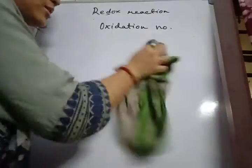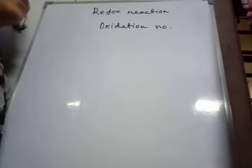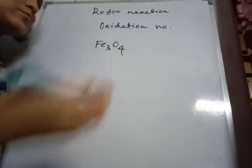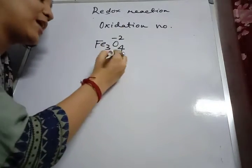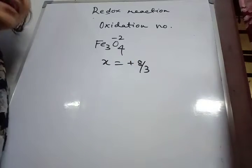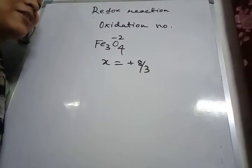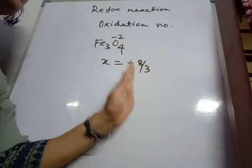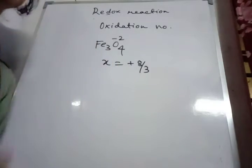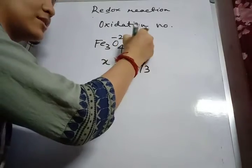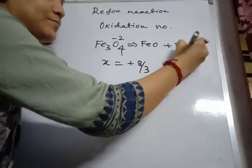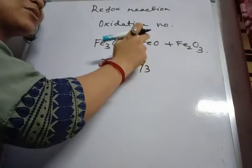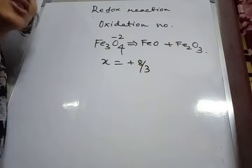There are some exceptions to oxidation number where the usual method is not followed. For example, Fe3O4: if we calculate the oxidation number of iron taking oxygen as minus two, we get the oxidation number of iron as plus eight-thirds, which is fractional. This is because Fe3O4 is a combination of ferrous oxide and ferric oxide, and plus eight-thirds is the average oxidation number of iron present in both. So here, average oxidation number is used.